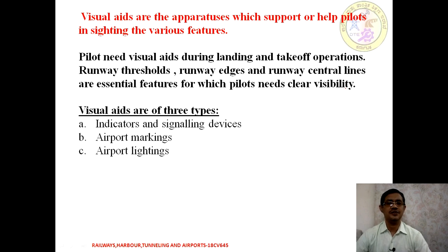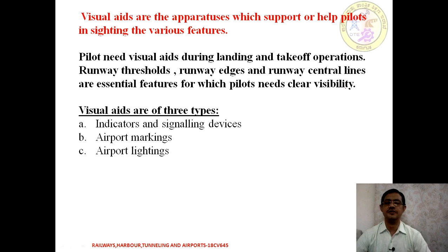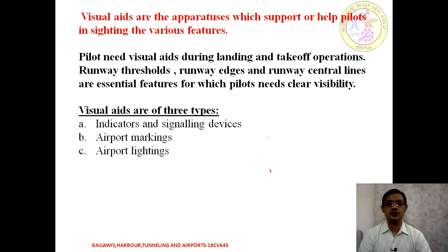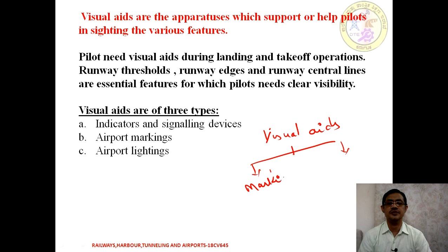The pilot needs visual aids during landing or takeoff operations. In such cases, we have the runway threshold, runway edges, and centerline. These are essential features for ease of takeoff and landing with respect to clear visibility. For safer operation of the aircraft, visual aids are of two types: one is marking and the next is lighting.